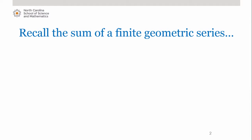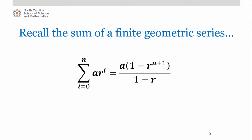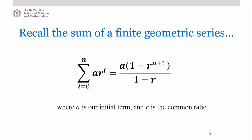As you read in the lesson, we know that the sum of a finite geometric series with n plus 1 terms is given by this formula, where a is the initial term and r is the common ratio. To investigate the sum of the associated infinite geometric series, we look at the limit of this sum as n approaches infinity.